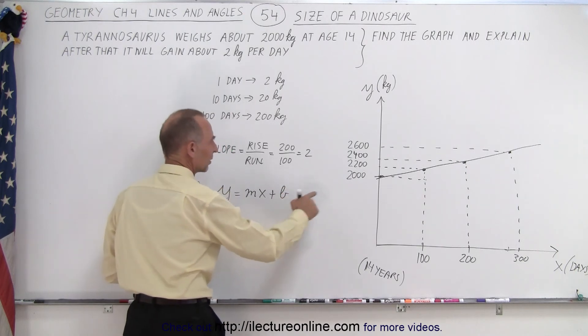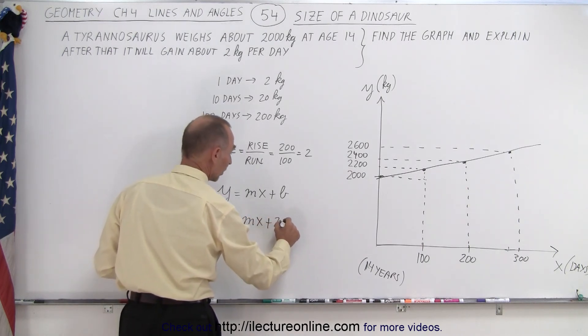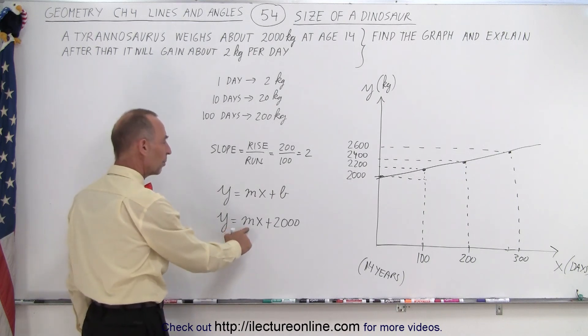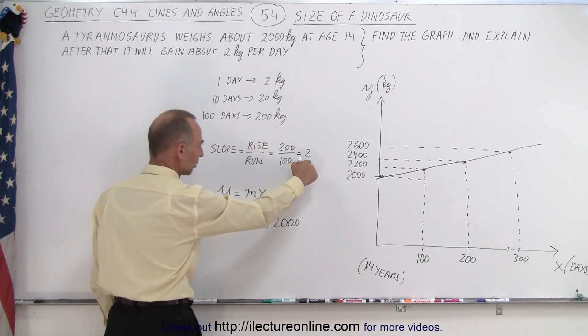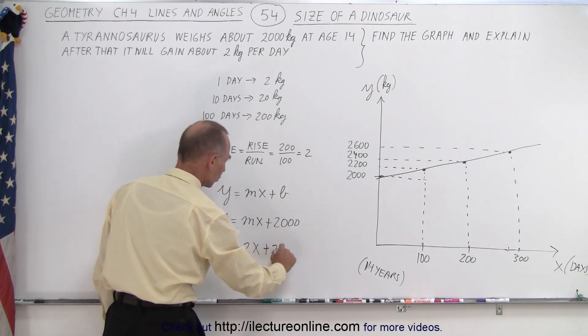And right away you can see that there's an intercept at 2000 so we can say that y is equal to mx plus, or I should say 2000, not 200 but 2000, and then the slope is the rise over the run and we can see that's equal to 2 so y is equal to 2x plus 2000.